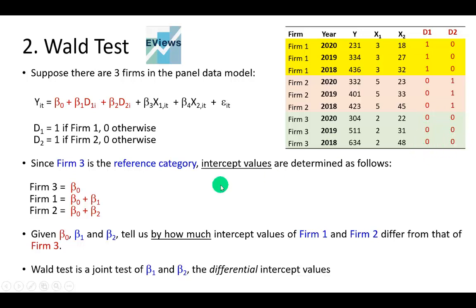So as a result, I showed in the previous videos that the intercept term unique for firm 3, the reference category, is beta sub 0. While the intercept values for firms 1 and 2 is going to be beta sub 0 plus beta sub 1, which is the coefficient of its dummy variable, and D2 for firm 2.